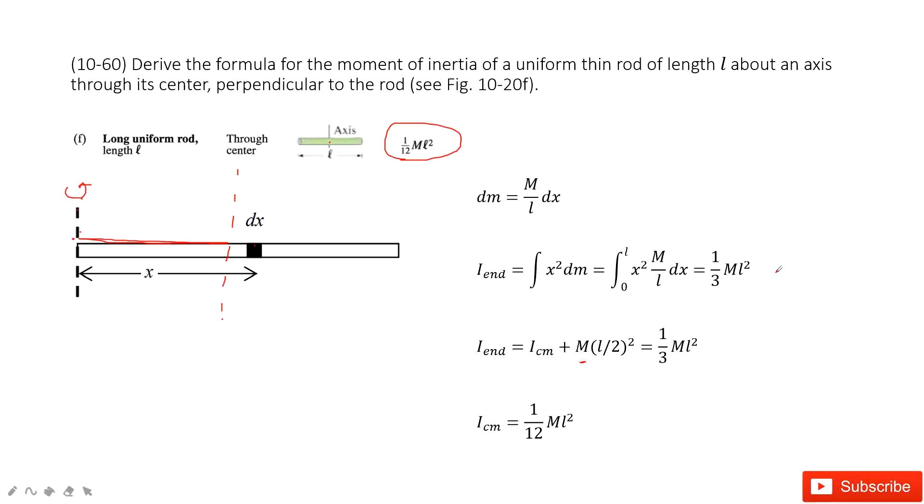So we input the i end is 1 over 3 ml squared. So this one, we can find the moment of inertia along the center. For this long uniform rod is 1 over 12 ml squared. Thank you.